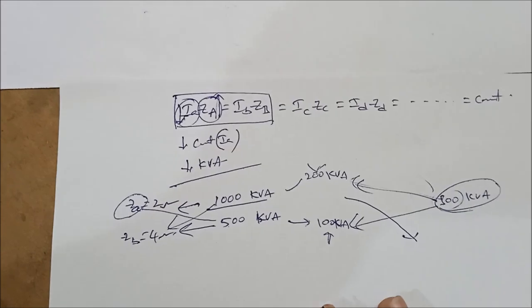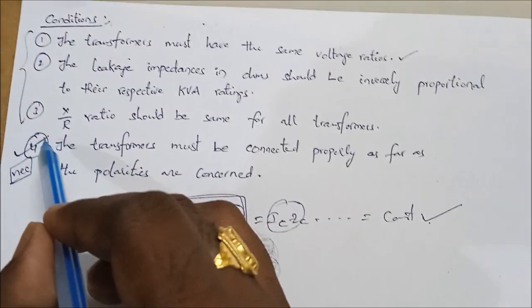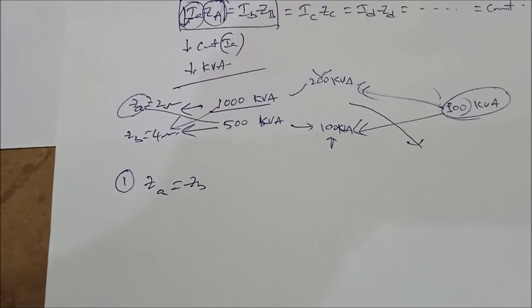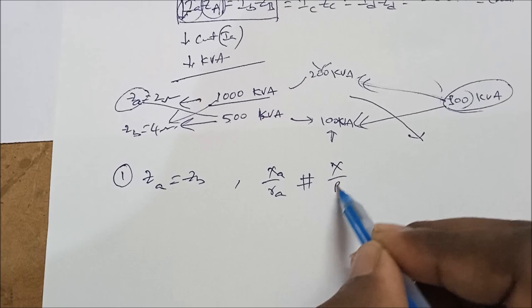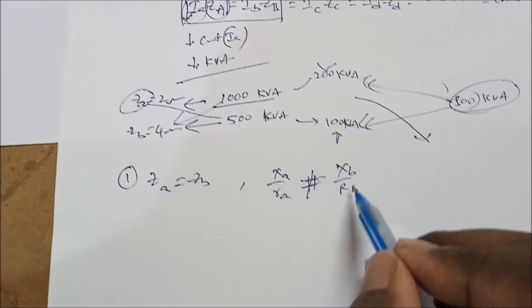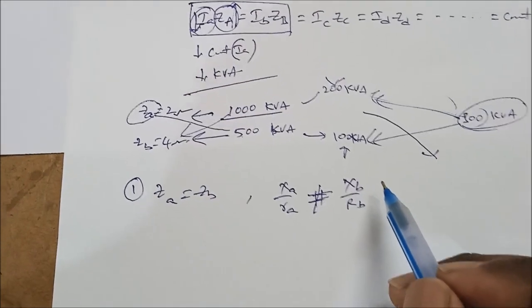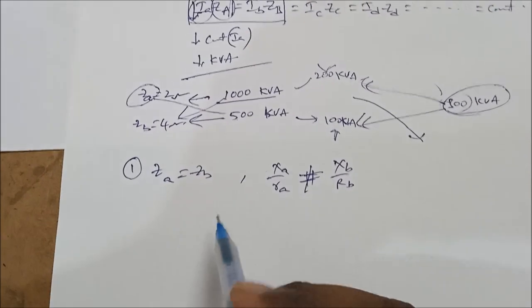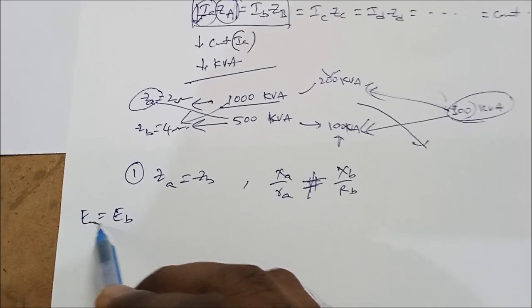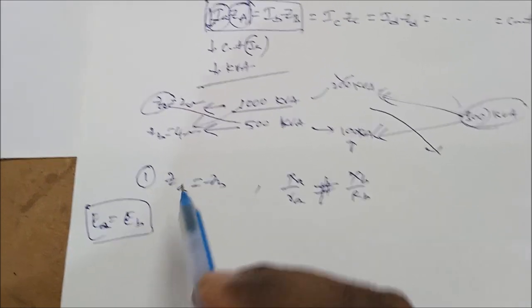Now let us go to the third point: the X/R ratio. Consider Case 1: Za = Zb, but the X/R ratio of the first transformer is not equal to that of the second — Xa/Ra ≠ Xb/Rb. This is a desirable condition but not a necessary one; even if X/R ratios are not equal, transformers can still be connected in parallel. We continue assuming equal voltage ratios, i.e., Ea = Eb.